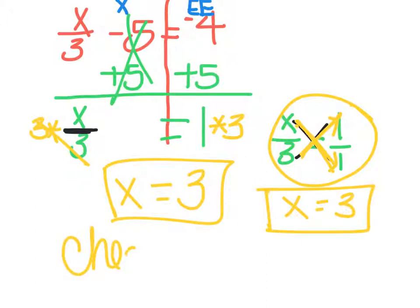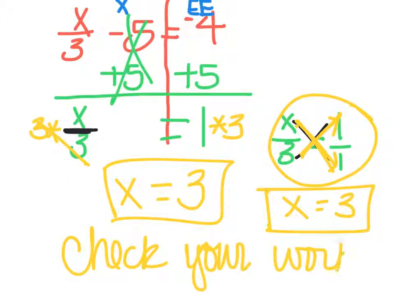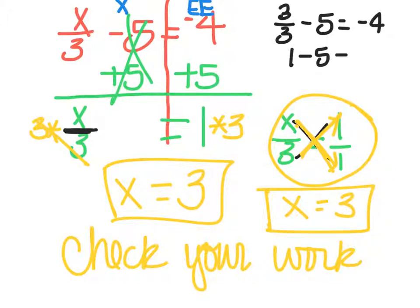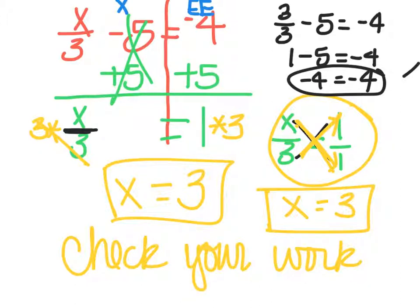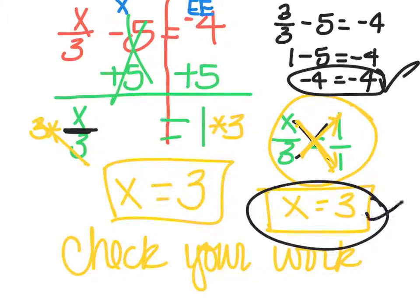Don't forget to check your work — plug it back in and make sure it works. So instead of x over 3, I'm going to put 3 divided by 3, minus 5, equals negative 4. Well, 3 divided by 3 is 1, and 1 minus 5 — we've got to see if that equals negative 4. 1 minus 5 means I have a dollar but I owe somebody 5, so I'll pay them what I can and I'm still going to owe 4. So lo and behold, both sides are negative 4, which means positive 3 was our correct answer.